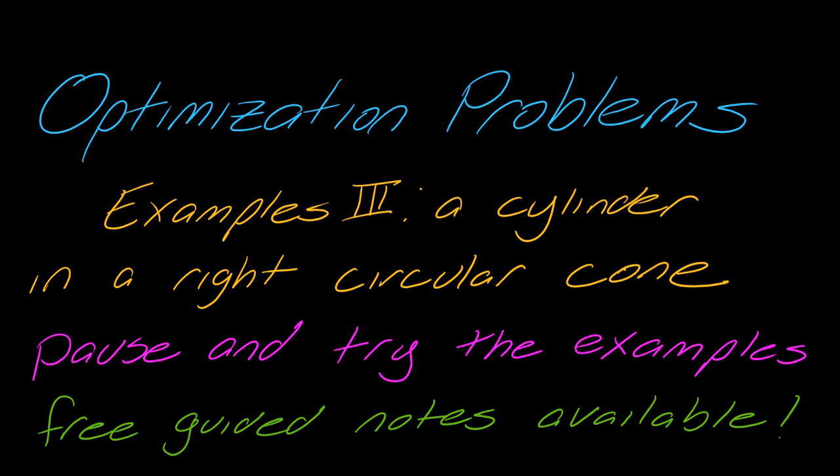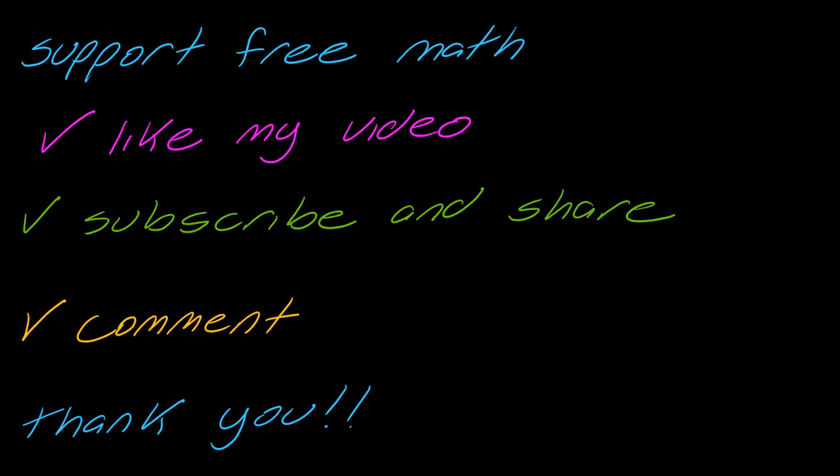Hey guys, this is my series on optimization problems. This is my third example, a cylinder in a right circular cone. The way my videos work, you want to pause and try parts of the example when you're prompted, and there are always free guided notes available at divideandconquermath.com. And hey, while you're here, maybe you could consider liking my video or subscribing to my channel. That super helps me with providing free math on the internet. Okay, so let's get into it. Find the dimensions of the largest right circular cylinder of greatest volume that can be inscribed in a right circular cone of radius R and height H.